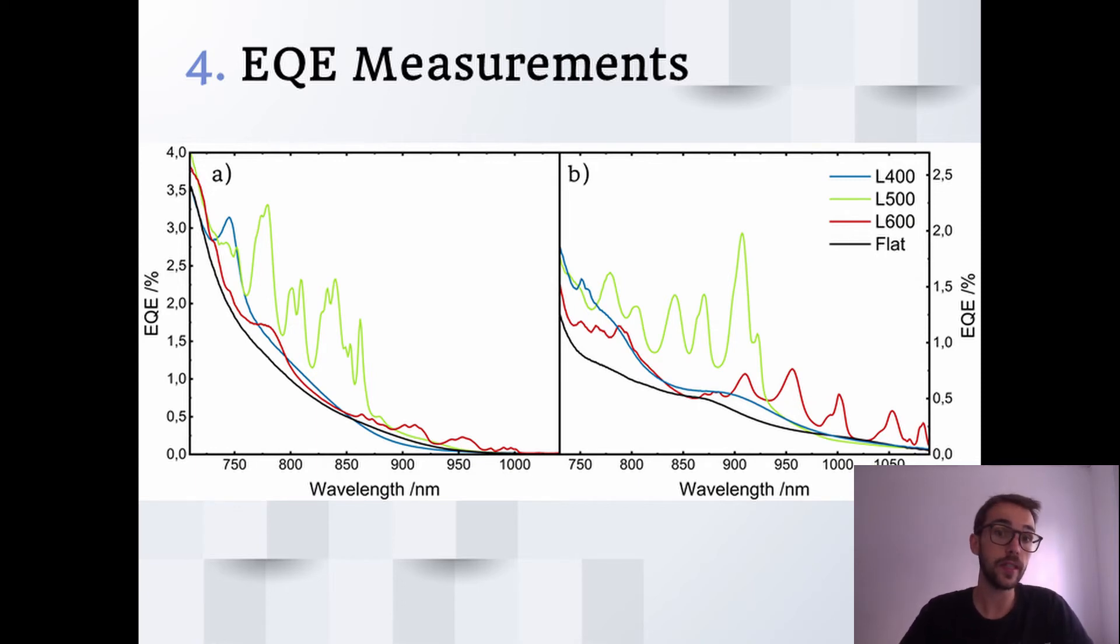For the photodetectors that had a 600 nanometer lattice parameter, the absolute peaks are lower, especially in the P3HT. However, they go much deeper into the near infrared. In P3HT, they cover the region from 900 to 1000 nanometers and they have an enhancement of up to 5 times.